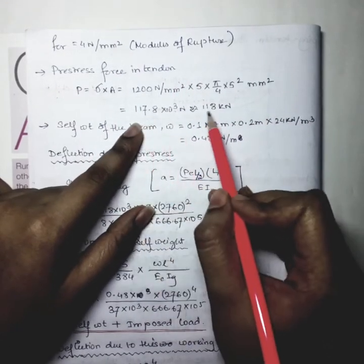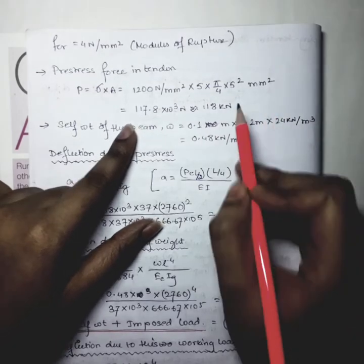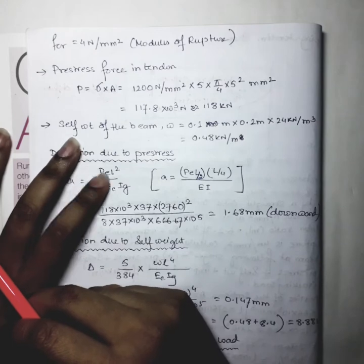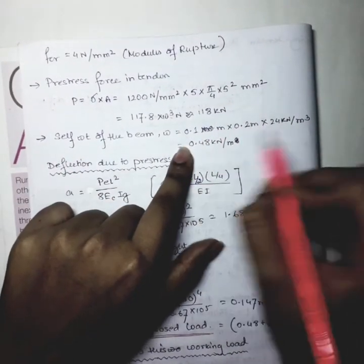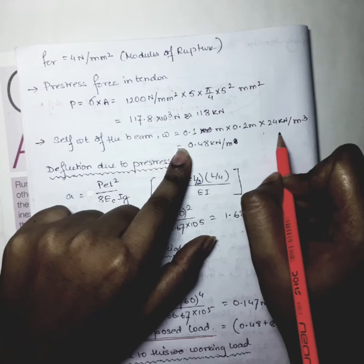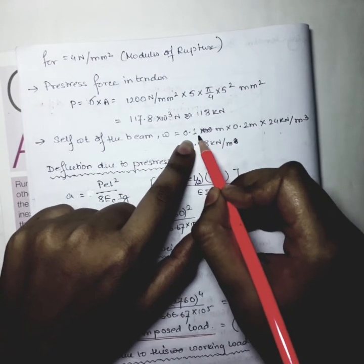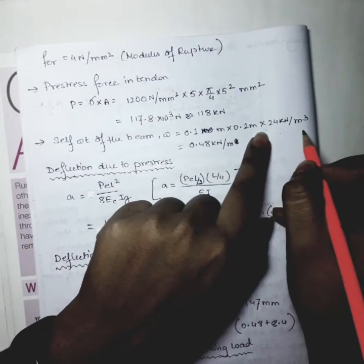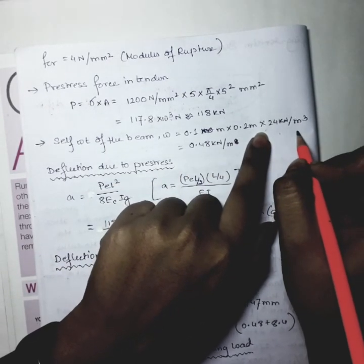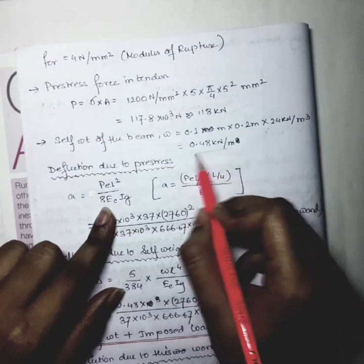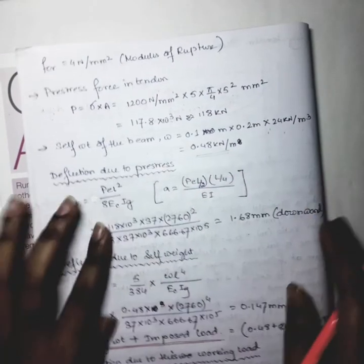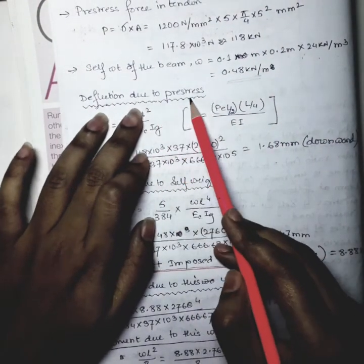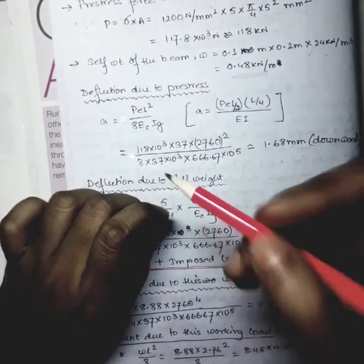Self-weight of the beam = area × unit weight of concrete = 100 mm × 200 mm × 24 kN/m³ = 0.48 kN/m. Now let us find the deflection due to pre-stress.